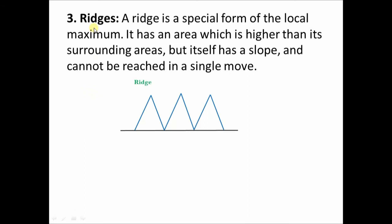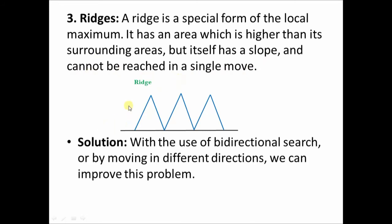The solution to ridges is the use of bi-directional search or moving in different directions. All searches seen so far are forward direction searches. There is also backward direction search, and bi-directional search is carried out from both sides — from the goal towards the initial state and from the initial towards the goal state. By employing such bi-directional search mechanisms and moving in different directions, we can improve this particular problem.